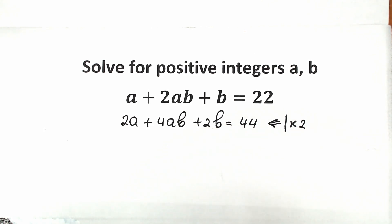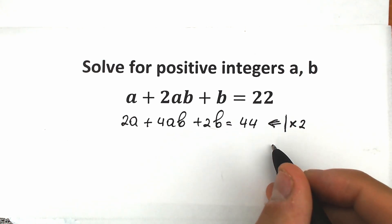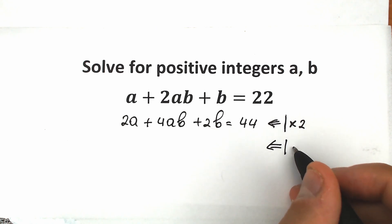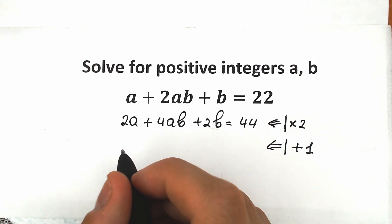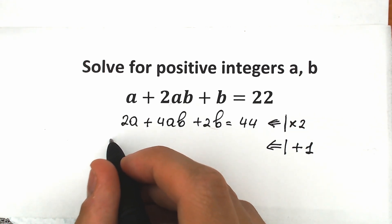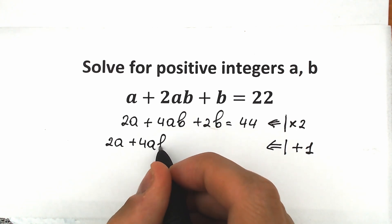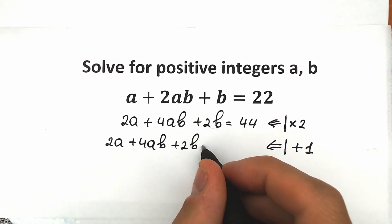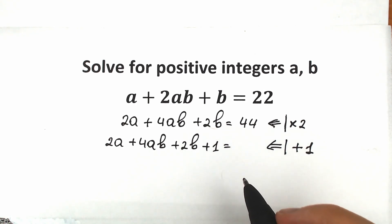What we're going to do next? Let's add 1 to both sides. So in the second step we add 1 to both sides. On the left side we have 2a plus 4ab plus 2b plus 1, equal to 44 plus 1, equal to 45.